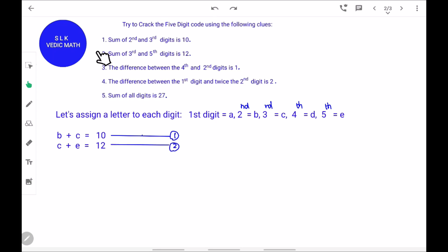In the second clue, it says sum of 3rd and 5th digits is 12. So, C plus E equal to 12.